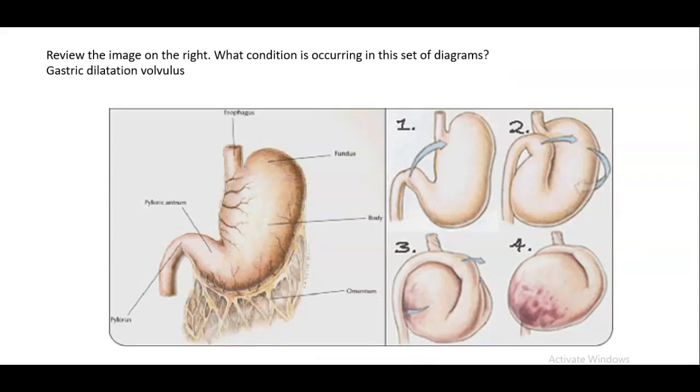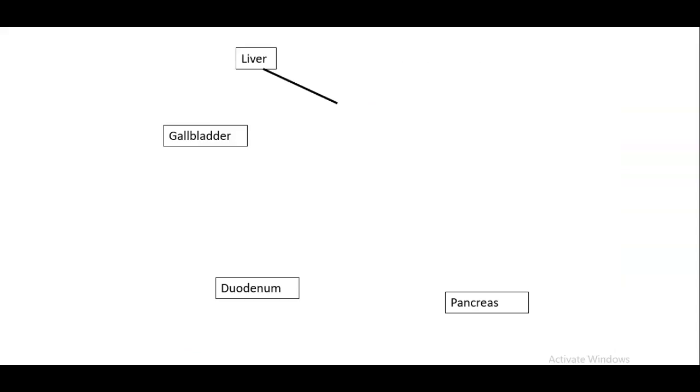So review the image on the right, what condition is occurring in this set of diagrams. This is gastric dilatation volvulus. So what's happening, the stomach bloats, and then with a bit of gravity and the stomach swinging like a pendulum, it swings over itself, and essentially it gets tied off at the esophagus and the pylorus. And that's of course an emergency surgery.